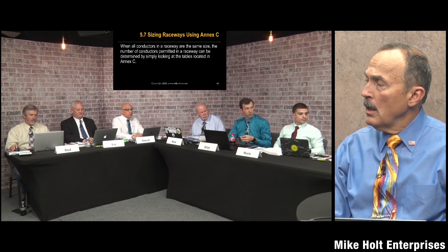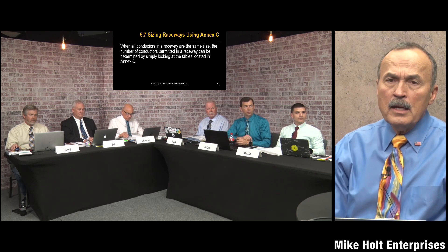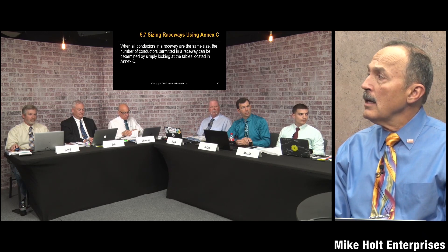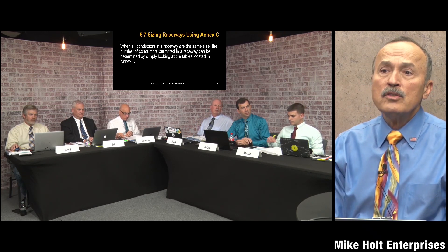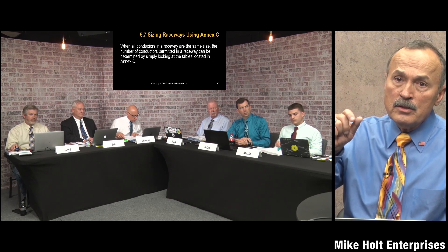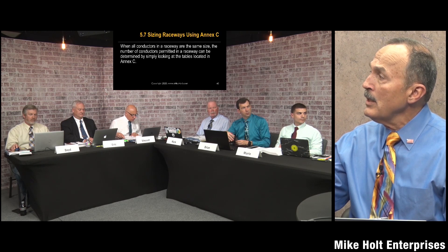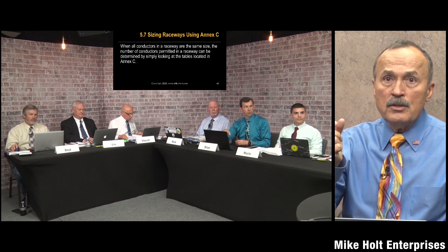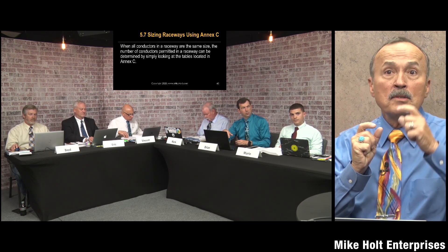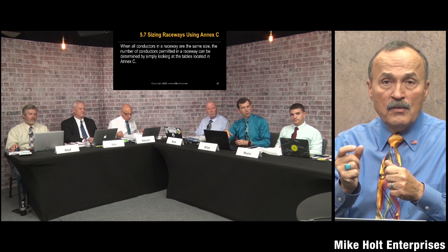Ryan, who works with us, had 300 KCMIL XHHW and wanted to find out how many could fit in a 2-inch raceway. You take the XHHW 300 KCMIL, go to Chapter 9 Table 5, find the area of the conductors. Then go to Table 4 - Schedule 40 PVC - find the area at 40% fill, then divide the conductor area into the conduit fill area.